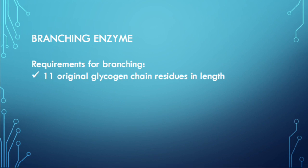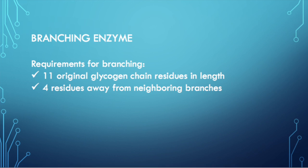There are a couple of requirements for the branching enzyme. First, the original glycogen chain must be at least 11 residues in length before it can break the alpha-1,4 linkage. Second, the group broken off must be placed at least four residues away from any neighboring branches.